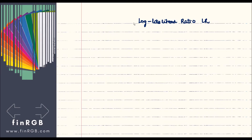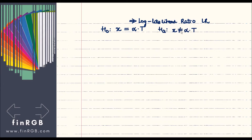To understand this, let's quickly recap how we do a backtest. Typically, we do it as a hypothesis test. The null hypothesis H-naught is written as: the number of exceptions x equals alpha times t, where t is the backtest window. The alternate hypothesis is x not equal to alpha times t. This test is typically a two-tailed test.